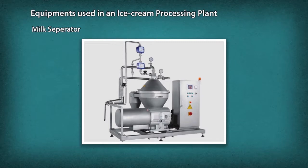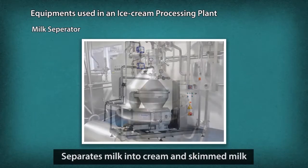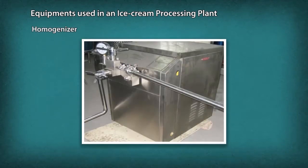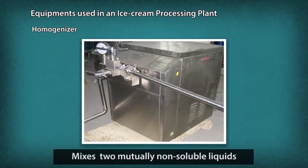Milk Separator: A separator is a centrifugal device that separates milk into cream and skimmed milk. Homogenizer: Homogenization is the process used to make a uniform mixture of two mutually non-soluble liquids. This is achieved by turning one of the liquids into a state consisting of extremely small particles distributed uniformly throughout the other liquid.